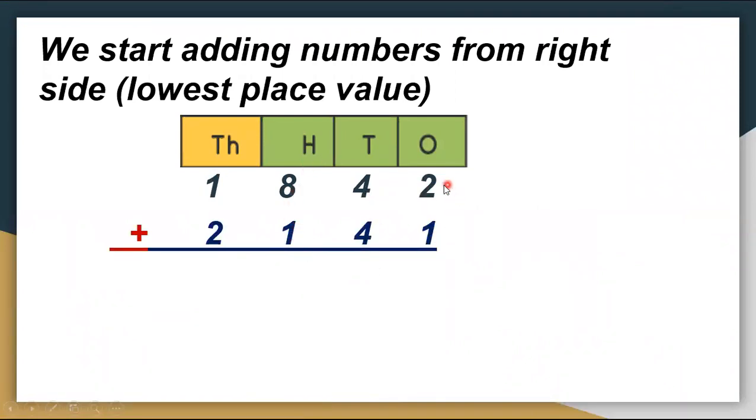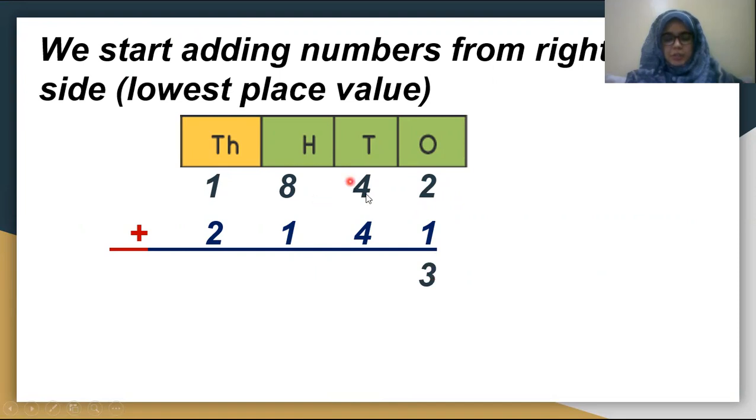So let's start. This is the example from your previous lecture. 2 plus 1, 2 plus 1 is 3. This is the example without conversion. 4 plus 4 is 8, 8 plus 1 is 9, and 1 plus 2 is 3. 3983 is your total answer.